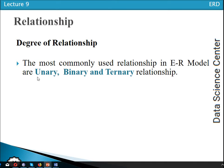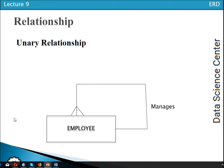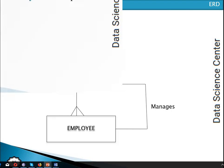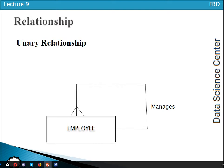When only one entity type participates in a relationship, that is called a unary relationship. A unary relationship is a relationship among the instances of a single entity type — the entity type has a relationship with itself, and that is called a recursive relationship. For example, an employee can manage one or many employees, or zero or many employees.